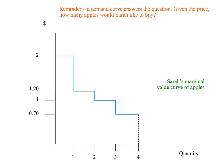Now, that's all very well, but we actually don't know Sarah's marginal value curve — we haven't come across that before. What we have come across is Sarah's demand curve for apples. Remember that a demand curve answers the question: given the price, how many apples would Sarah like to buy? Let's try to work out Sarah's demand curve and put it on the same diagram as her marginal value curve, since we have quantity on the horizontal axis and dollars on the vertical axis.